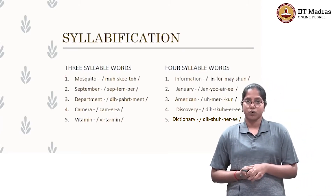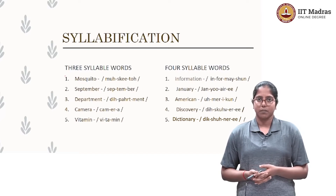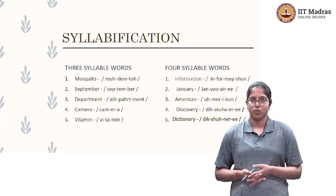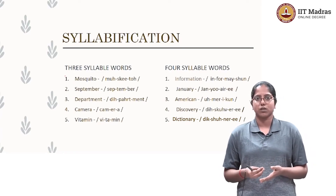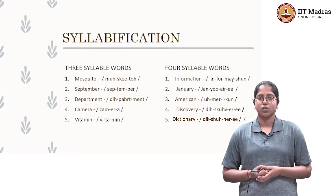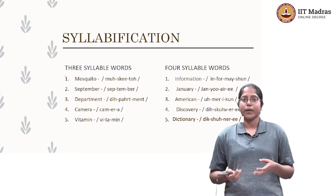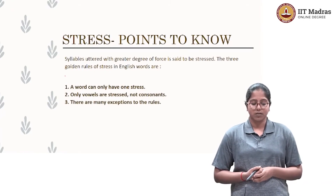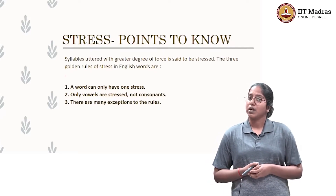Now, an important thing to notice is: do you pronounce all these syllables the same way? For example, January — no, you don't. You have an added force or stress on one of the syllables. So next we are going to look at stress and see how a word can be pronounced with stress. Syllables uttered with a greater degree of force are called stressed syllables, and the rest are called unstressed syllables.